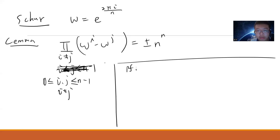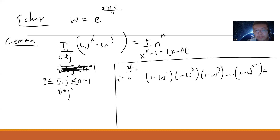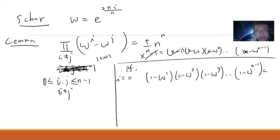Let's fix i to be 0. So for i = 0, I get (1 − ω)(1 − ω²)(1 − ω³)···(1 − ω^(n−1)). By definition, x^n − 1 = (x−1)(x−ω)(x−ω²)···(x−ω^(n−1)). If you divide out (x−1), you get 1 + x + x² + ··· + x^(n−1). So plugging in x = 1 gives the result.